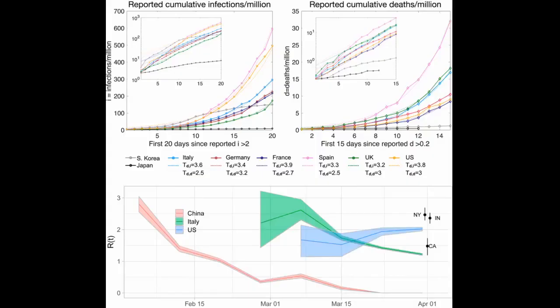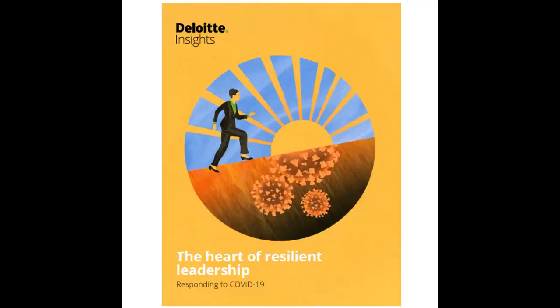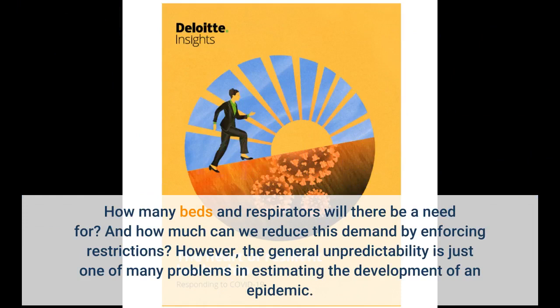It depends in part on coincidences, explains postdoc Jonas L. Jewell. It is precisely the unpredictability of epidemics which makes it so difficult to make the right decisions everywhere in society when it hits — such as how many beds and respirators will there be a need for, and how much can we reduce this demand by enforcing restrictions?